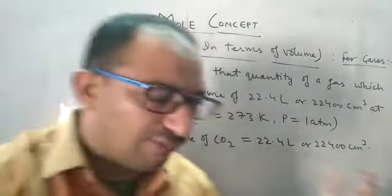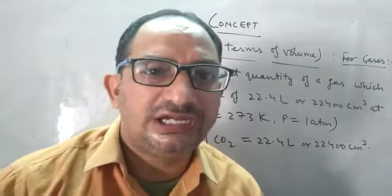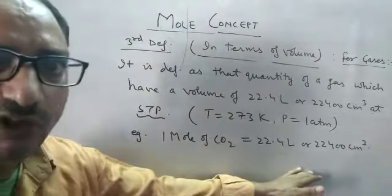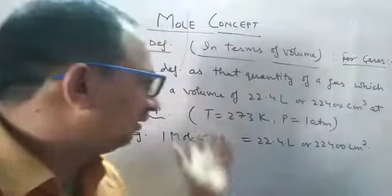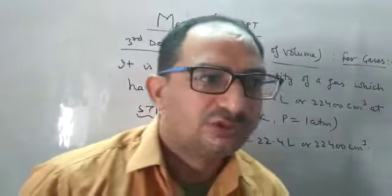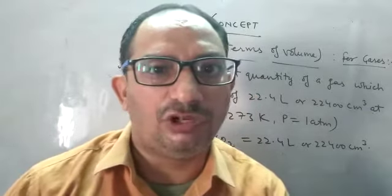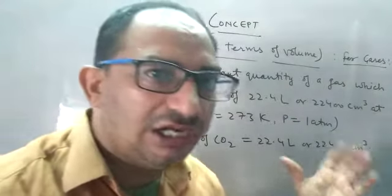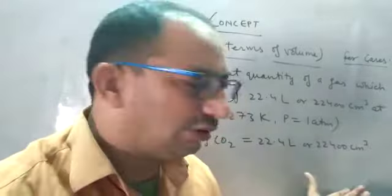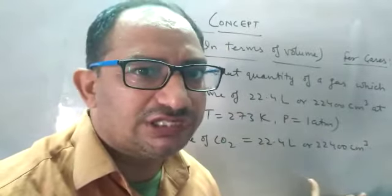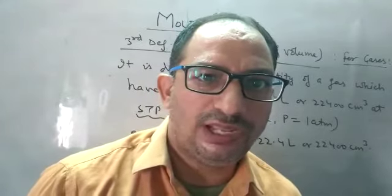So saying one mole of CO₂ or 22,400 cm³ both represent the same thing — but this is valid only if the condition is STP. If the condition is not STP, then this has no meaning. These are the three definitions of mole: in terms of mass, number, and volume. Learn and understand these three definitions and there is no numerical of mole concept you can't solve. In the next class we will discuss numericals of mole concept. Thank you, goodbye.